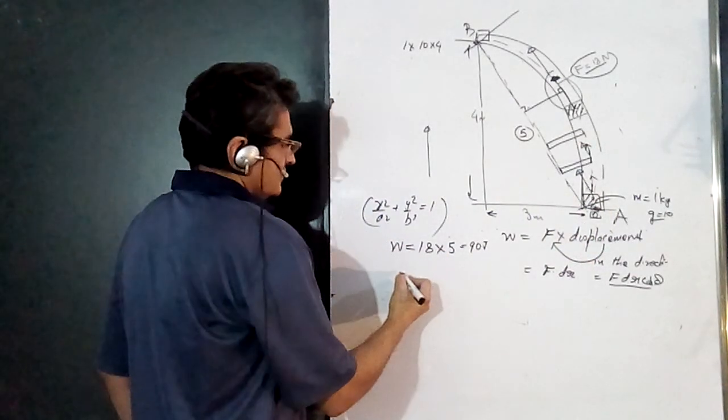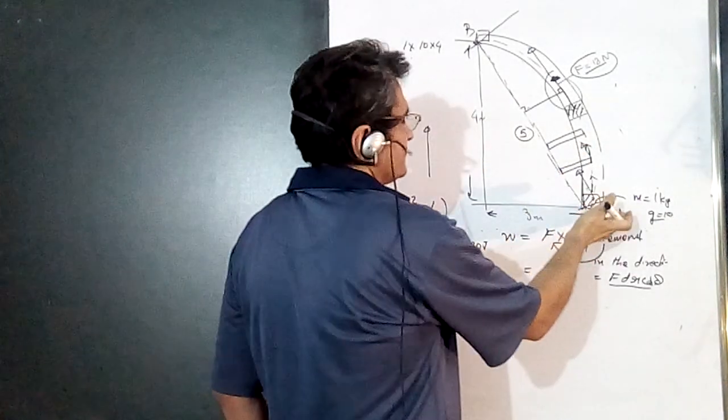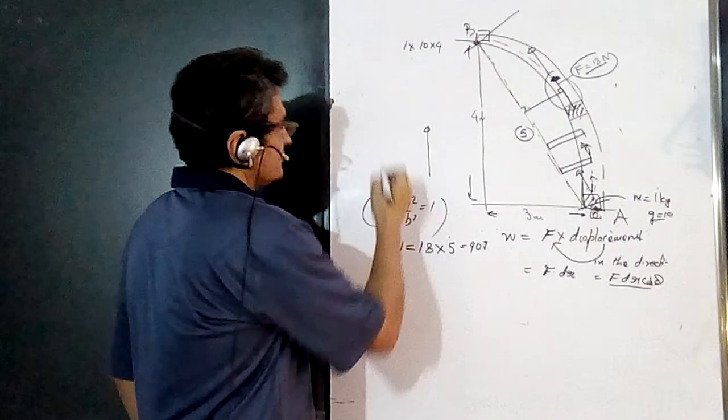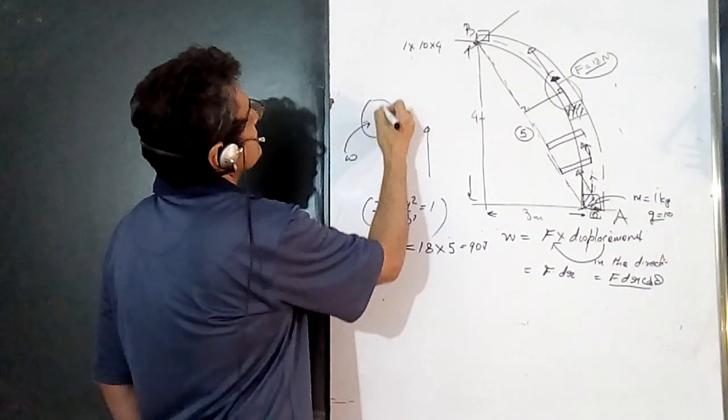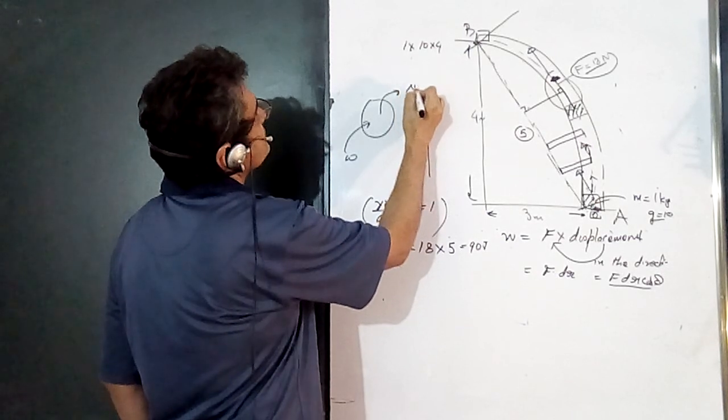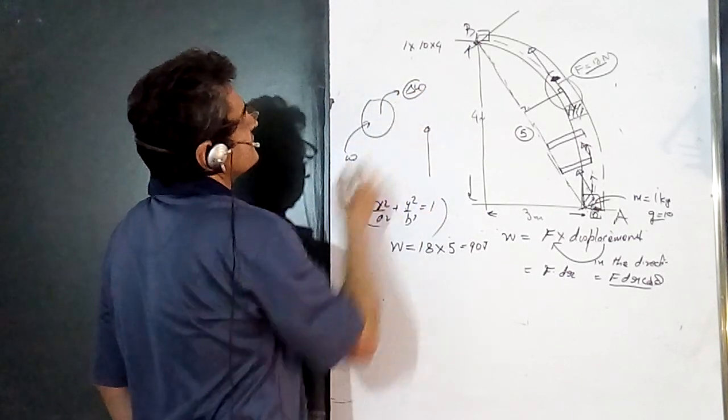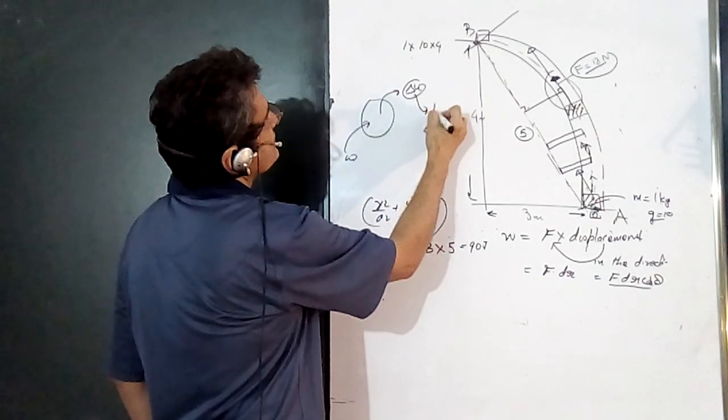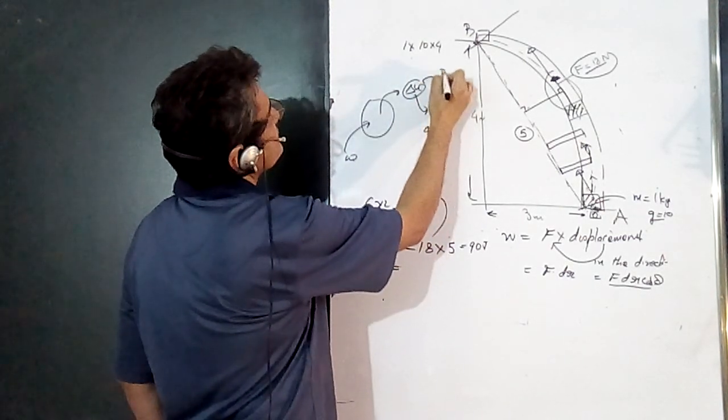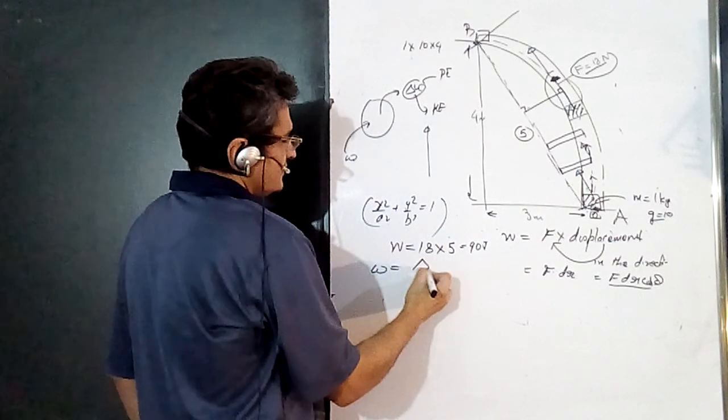Now this work which is done on any object raises its potential energy and kinetic energy. So if you do work on any system, this work will increase the energy. It will have two components: kinetic energy and potential energy. So it will raise both the potential energy plus the kinetic energy.